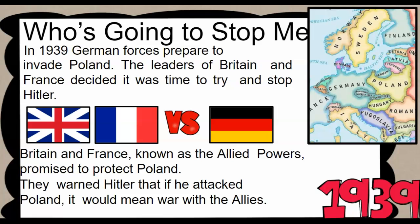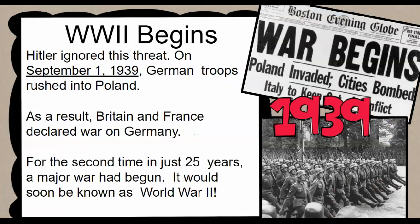At that point, Great Britain and France had an alliance with Poland. Together they agreed they needed to stop Germany. They warned Hitler that if he attacked Poland, it would mean another war. Hitler ignored that threat, and on September 1st, 1939, Germany entered Poland to take over the land. Great Britain and France declared war on Germany. For the second time in just 25 years, a major war had begun — it would soon be known as World War II.